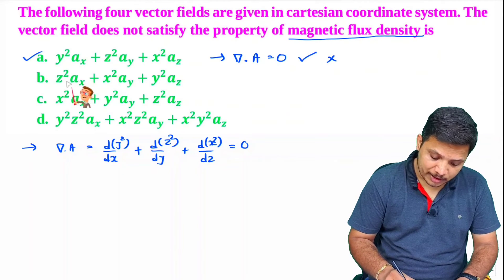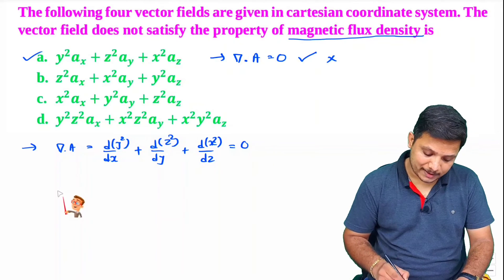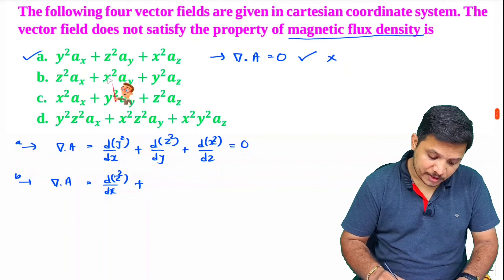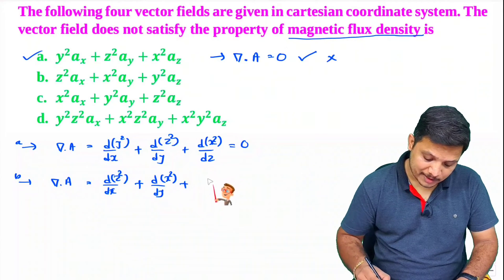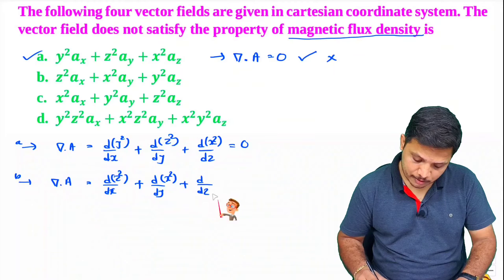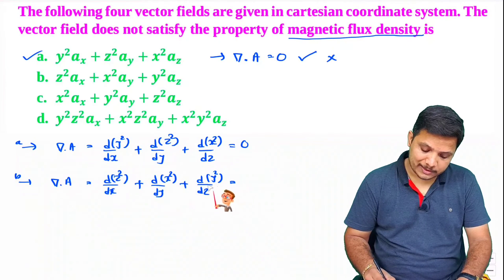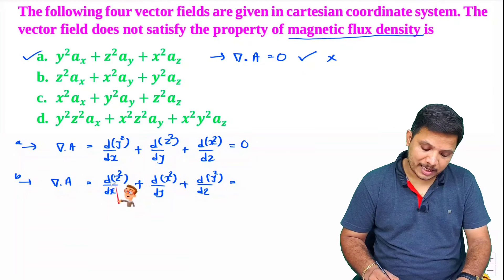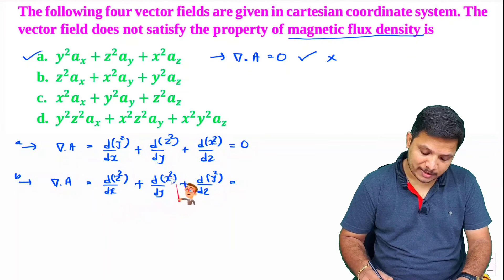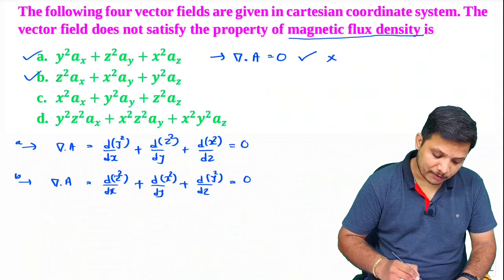Similarly, checking the next vector: differentiation of z² with respect to x, plus differentiation of x² with respect to y, plus differentiation of y² with respect to z — this is also zero, since z² is constant with respect to x, x² is constant with respect to y, and y² is constant with respect to z. So this vector also satisfies the property of magnetic flux density.